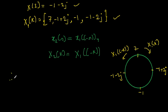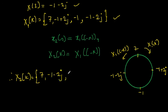Reading anticlockwise, the final answer is X2(k): X2(0) = 7, X2(1) = minus 1 minus 2j, X2(2) = minus 1, and X2(3) = minus 1 plus 2j. This answer was found using the circular folding property of DFT, which is also known as the time reversal property of a sequence.